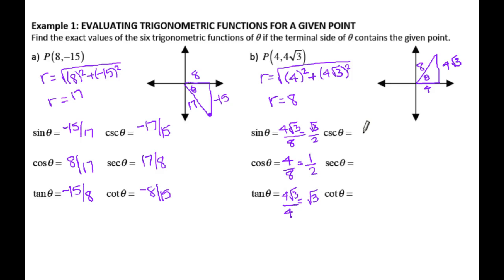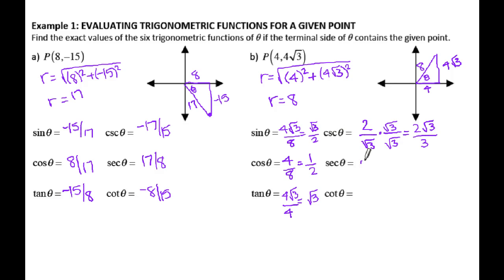Cosecant — take the reciprocal of sine and flip it over. You can't have radicals in the denominator, so multiply by √3 over √3, giving 2√3 over 3 for cosecant. Secant is just the reciprocal of 1/2, which is 2. Cotangent is the reciprocal of √3, which is 1 over √3, and you can change that to √3 over 3 by rationalizing the denominator.